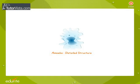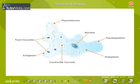Amoeba Detailed Structure. Observe carefully the detailed structure of amoeba. Amoeba is a simple protozoan, a one-celled animal whose vital activities such as nutrition, excretion, locomotion, respiration, and reproduction are completed in a single cell.